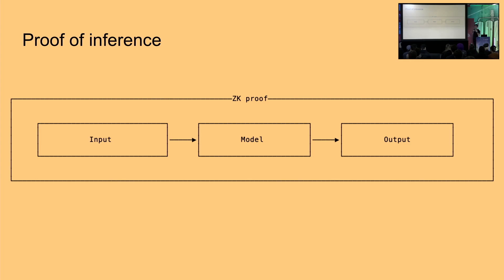That's why we talk about proof of inference — because when the model is already trained, it's just running a few linear combinations and a few matrix multiplications, and you're able to create a proof of that a lot more easily than with training.